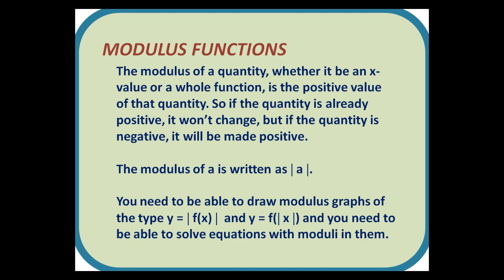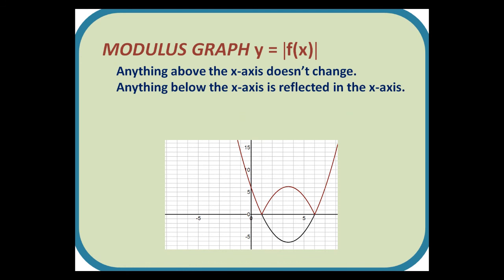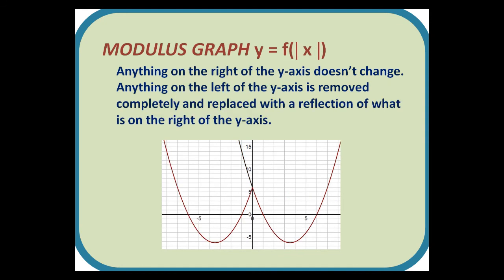The modulus of a quantity — whether it be an x-value or a whole function — is the positive value of that quantity. So if the quantity is already positive, it won't change, but if it is negative, it will be made positive. The modulus of a is written as a between two vertical lines. You need to be able to draw modulus graphs of the type y = |f(x)| and y = f(|x|), and solve equations with moduli in them. For y = |f(x)|: anything above the x-axis doesn't change, but anything below the x-axis is reflected in the x-axis. For y = f(|x|): anything on the right of the y-axis doesn't change; anything on the left is removed and replaced with a reflection of the right side.